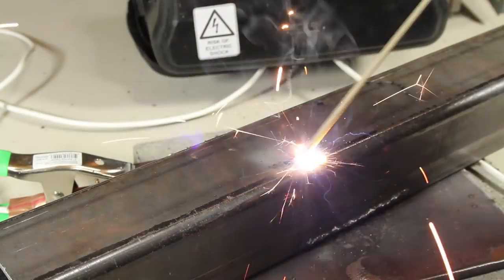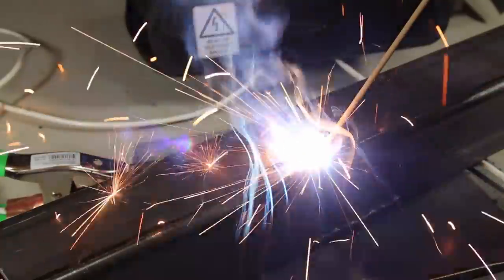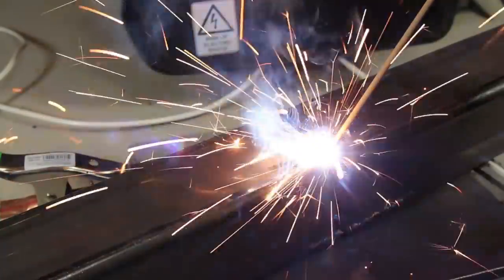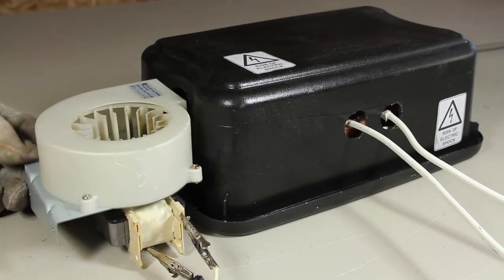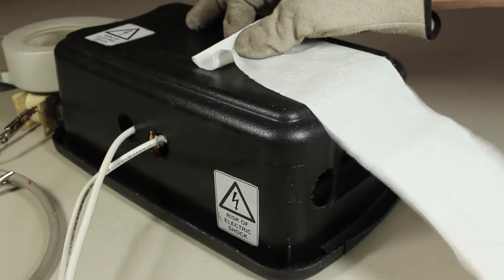I tried welding some larger three thirty-seconds rods, and that was a different story. They work alright, but the welder heats up fast. To cool it down, I have a fan that was salvaged from one of the microwaves, and it slides right up to the vent hole on the left. When it's turned on, air flows over the transformer coils and exhausts out the other side.